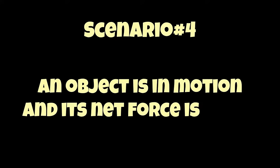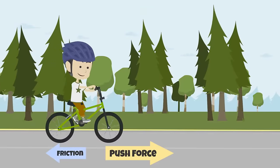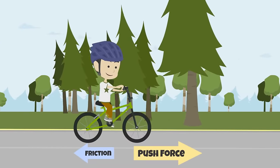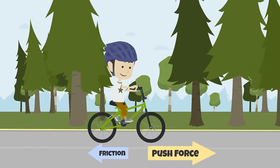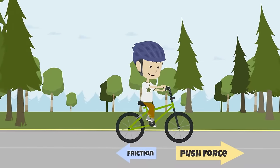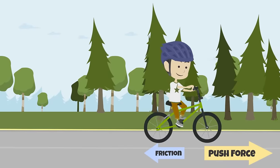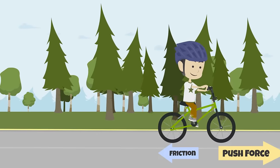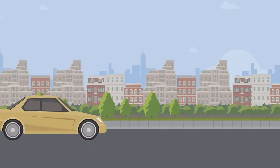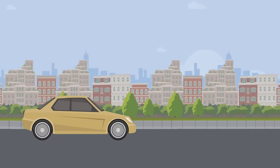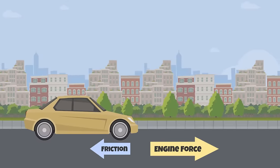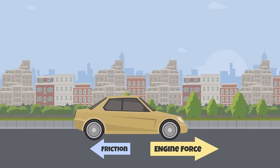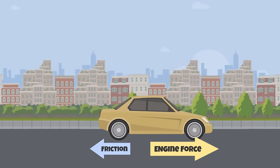An object is in motion and its net force is not zero. In this case, the object will experience a change in motion. Depending on the direction of the greater force, the speed or direction of the object will change. For example, when the gas pedal is pressed on a moving car, since its net force is greater than zero and in the direction of the vehicle's motion, its speed increases.